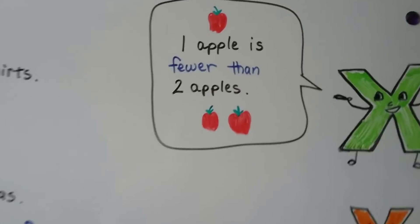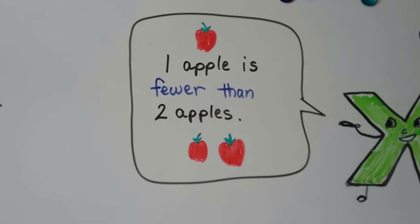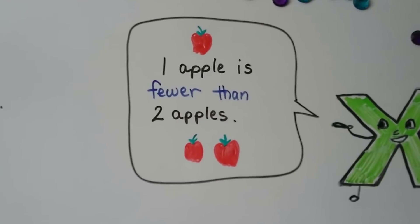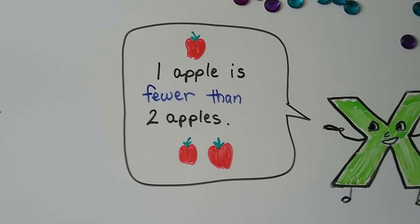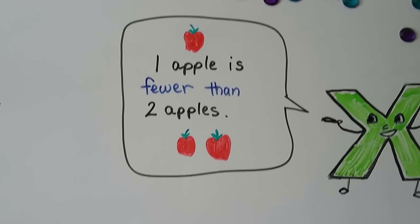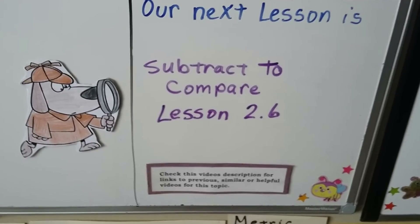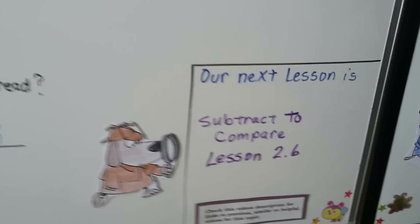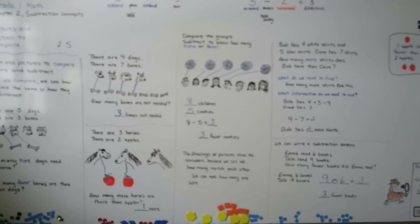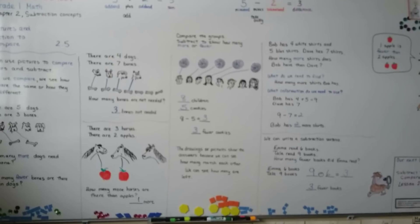One apple is fewer than two apples, so fewer means a smaller amount. The next lesson is going to be subtract to compare, Lesson 2.6. This chapter is all about subtracting and writing subtraction sentences and methods and ways we can subtract.